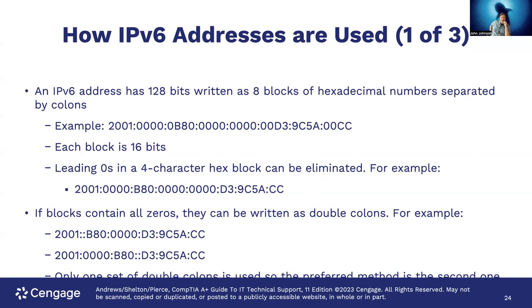An IPv6 address has 128 bits written as eight blocks of hexadecimal numbers separated by colons — for example, 2001:0000:0B80:0000:0000:00D3:9C5A:00CC. Each block is 16 bits, and leading zeros in a four-character hex block can be eliminated. If you have blocks that contain all zeros, you can rewrite them with double colons — but you can only use that shorthand once. So 2001:0000:0B80:0000:0000:00D3:9C5A:00CC can be condensed to 2001::B80:0:0:D3:9C5A:CC, choosing the longer run of zeros for the double-colon substitution.